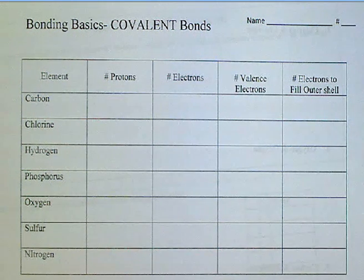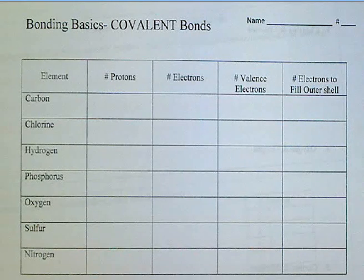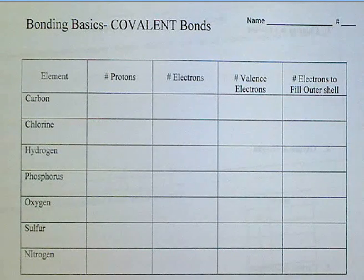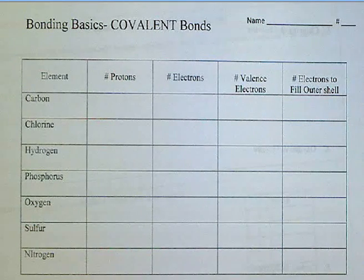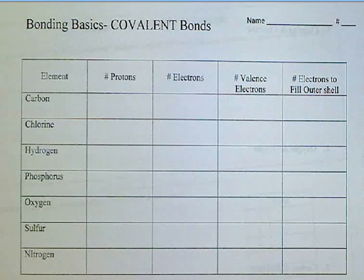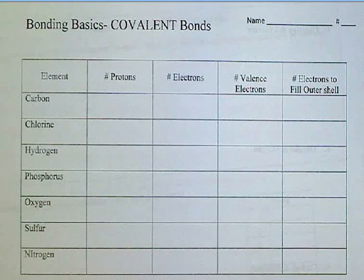Bonding basics with covalent bonds — you'll need to get out your periodic table. This will look very similar to how we began our ionic bonds bonding basics, so go ahead and get out your periodic table. I will go through the first one with you, but then you're to pause it and do the rest.